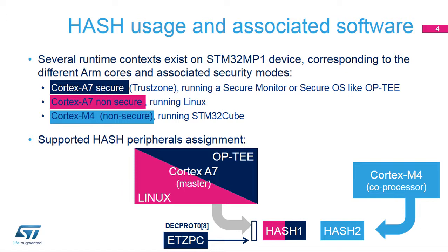The Hash1 instance can be allocated to the ARM Cortex-A7 secure core to be controlled in OP-TEE by the hash driver, or the ARM Cortex-A7 non-secure core for use in Linux with the Linux crypto framework. The Hash2 instance can be allocated to the ARM Cortex-M4 core to be controlled in the STM32-Cube MPU package using the STM32-Cube hash driver.